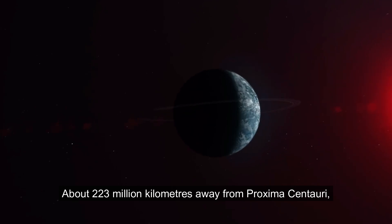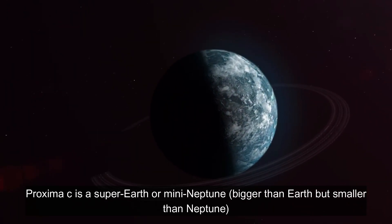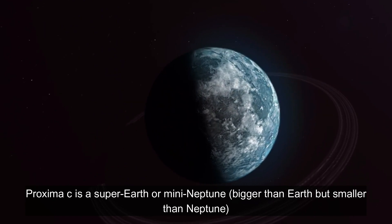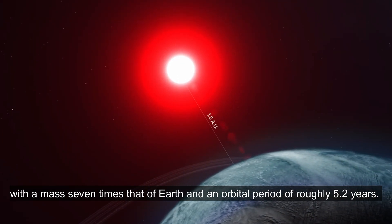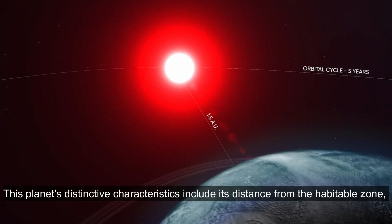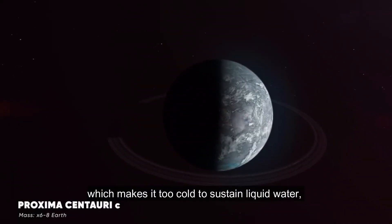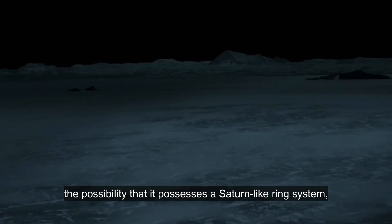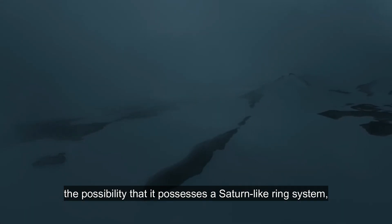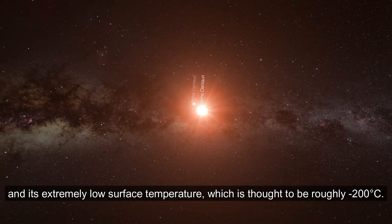About 223 million kilometers away from Proxima Centauri, Proxima C is a super-Earth or mini-Neptune, bigger than Earth but smaller than Neptune, with a mass seven times that of Earth and an orbital period of roughly 5.2 years. This planet's distinctive characteristics include its distance from the habitable zone, which makes it too cold to sustain liquid water, the possibility that it possesses a Saturn-like ring system, and its extremely low surface temperature, which is thought to be roughly minus 200 degrees Celsius.